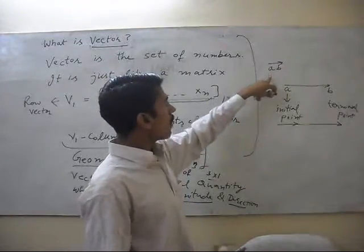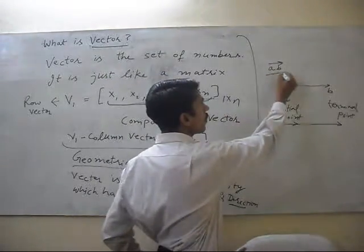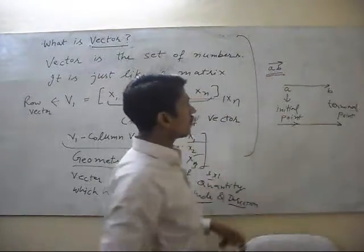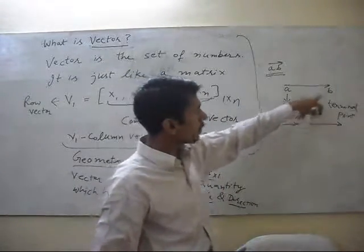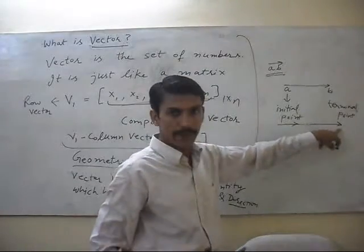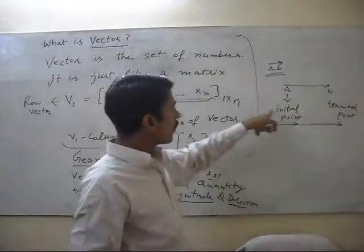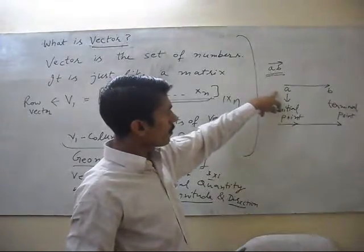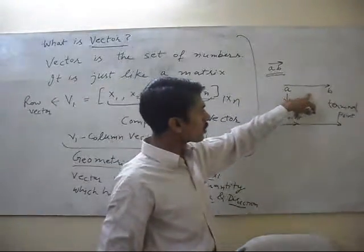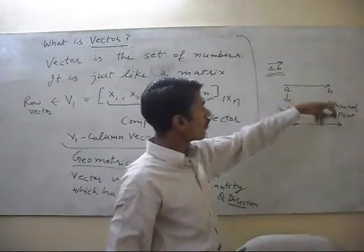This is the symbol of a vector. It has initial point and it has also terminal point. A is the initial point of vector and its direction is going to B. B is the terminal point of vector.